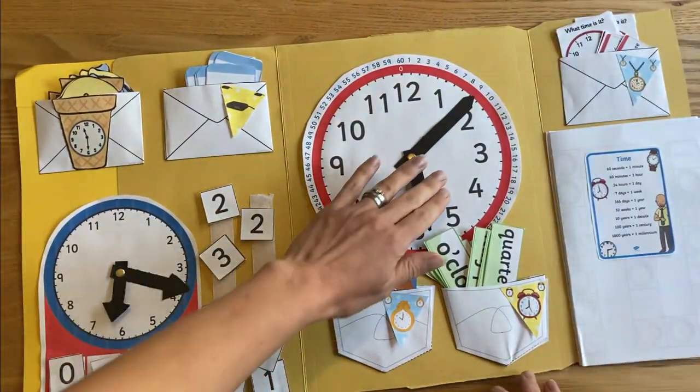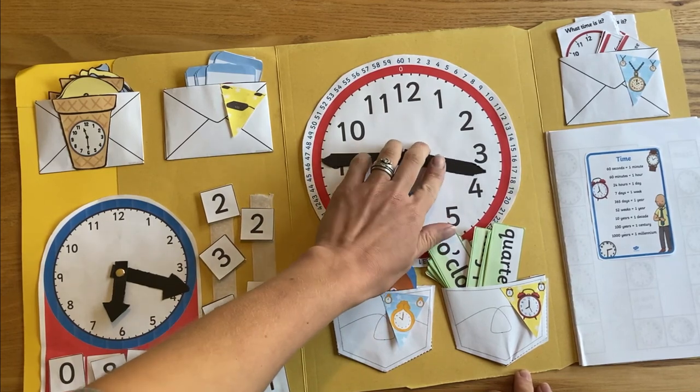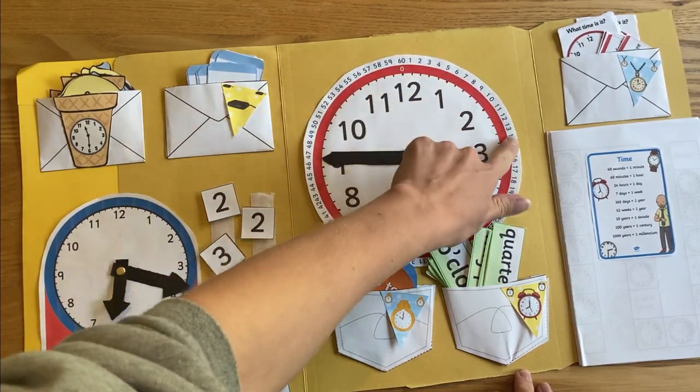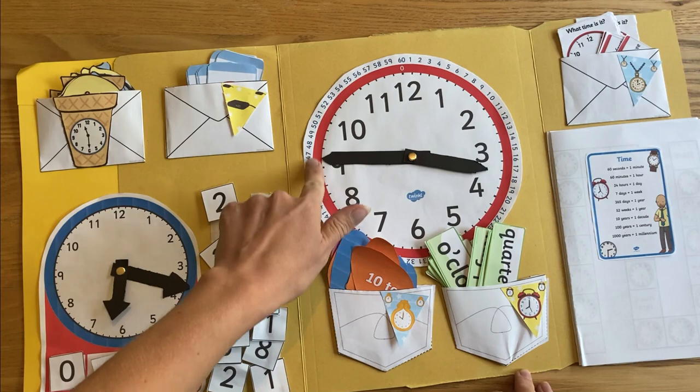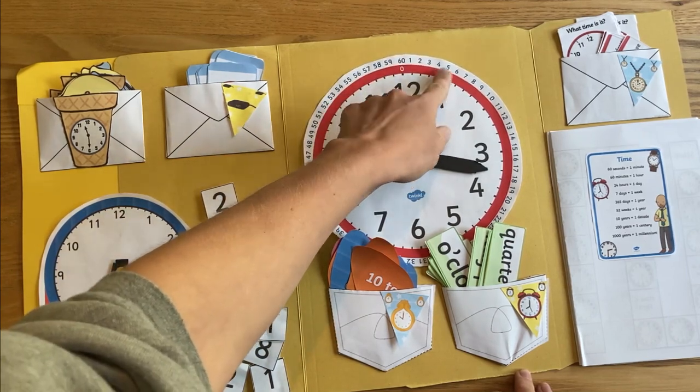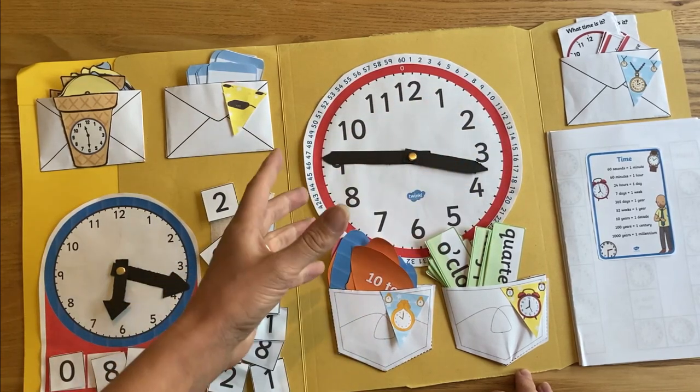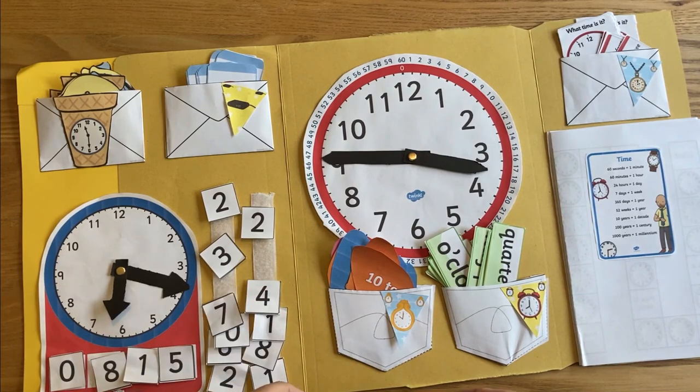Further inside the lap book we've got another big clock so we can talk about all the different times and what they mean. This clock has all the smaller minutes around the outside as well, so we can talk about when five minutes have passed, what quarter past means, how that's 15 minutes, 20 past, so it breaks it down.